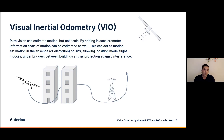VIO also protects against interference. There are cases where somebody — whether it's a teenager trying to cause trouble or a trucker who doesn't want his company tracking his hours — might jam GPS. When you're flying bigger and more expensive drones, it's really important that you're not susceptible to these types of things.